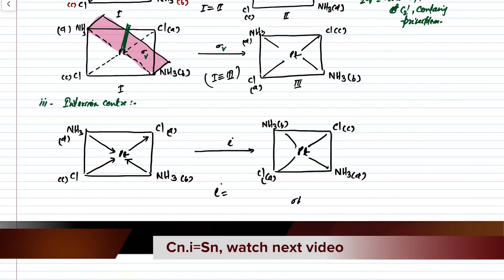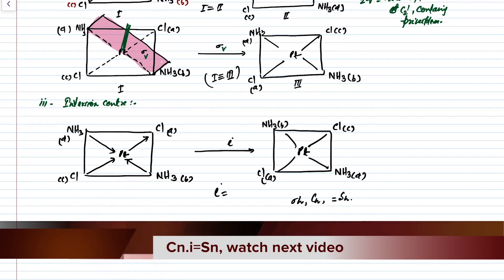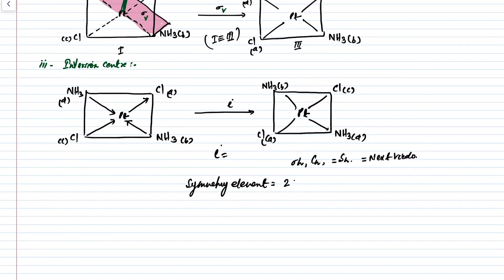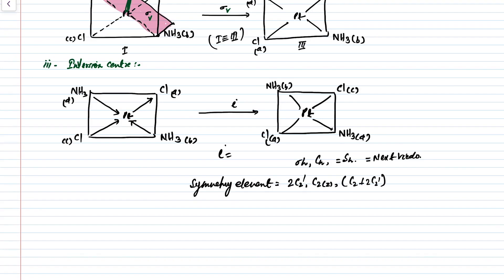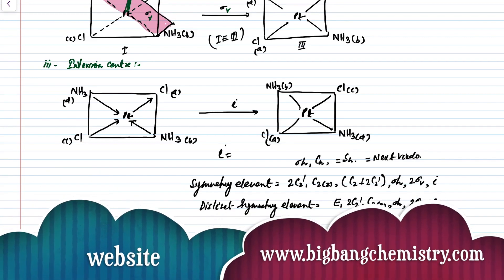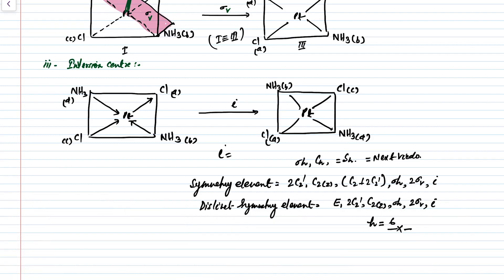This molecule has a horizontal plane but we do not consider the Sn improper rotation axis as a distinct symmetry element — we will explain that in the next video. So the total symmetry elements present in this molecule are: identity (E), two C2-dash axes, one C2 Z axis perpendicular to the C2-dash axes, one horizontal plane (sigma H), two vertical planes (sigma V), and one inversion center. Please visit my website for practice papers. Thank you very much.